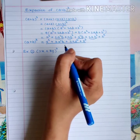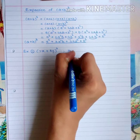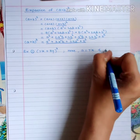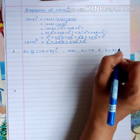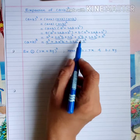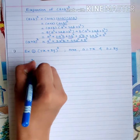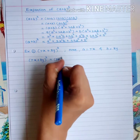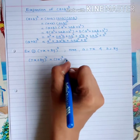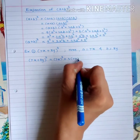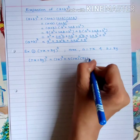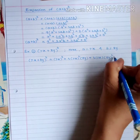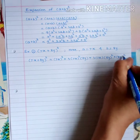In this example, a = 7x and b = 8y. Substituting these values in the expansion formula, we get: (7x + 8y)³ = (7x)³ + 3(7x)²(8y) + 3(7x)(8y)² + (8y)³.